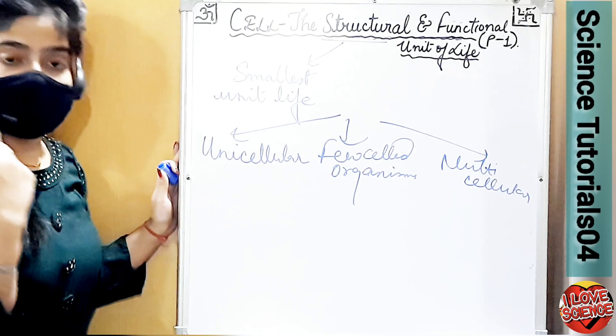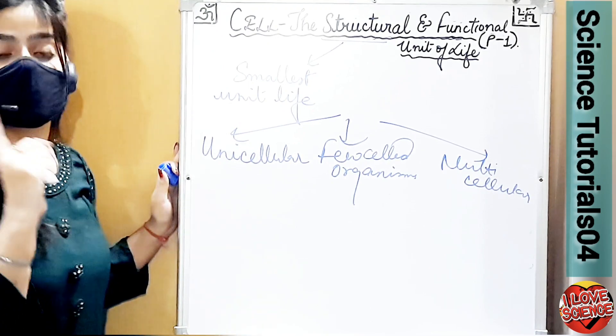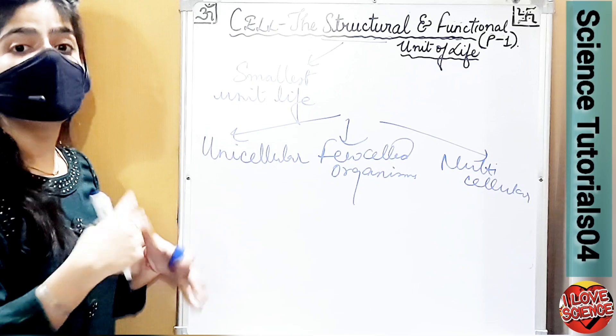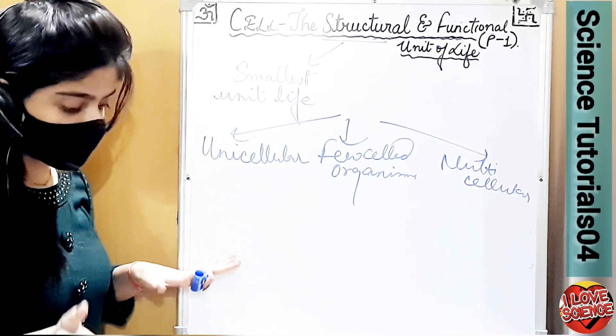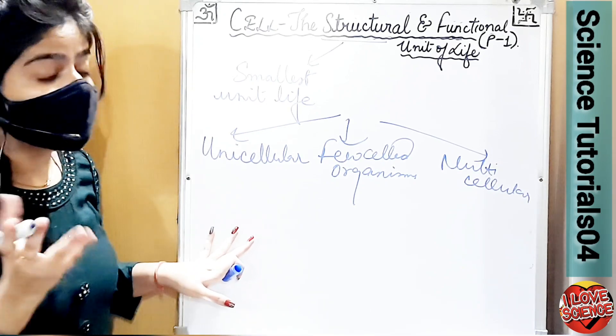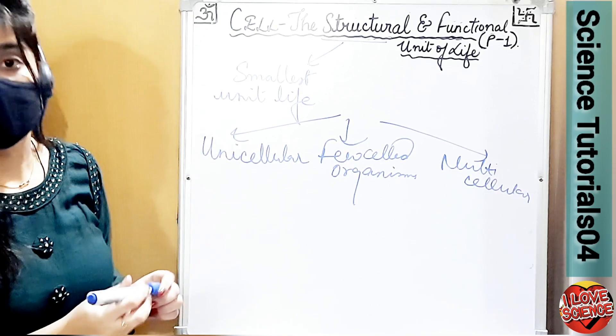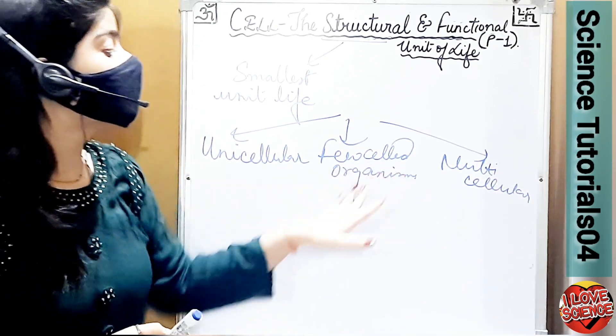Unicellular organisms are composed of just one cell like amoeba, paramecium, euglena, chlamydomonas, bacteria, and yeast. All these come under the unicellular category.